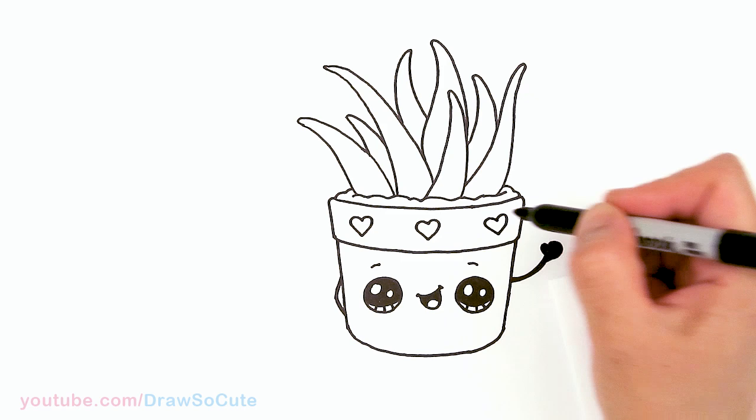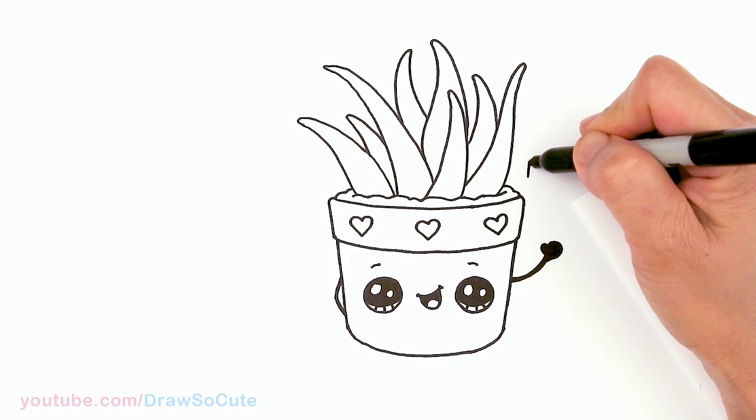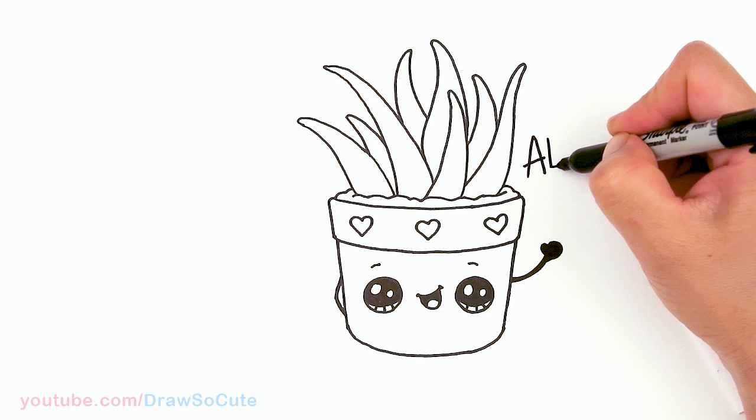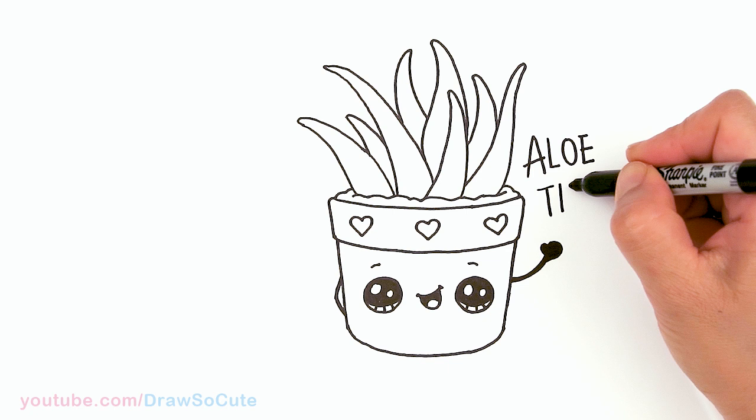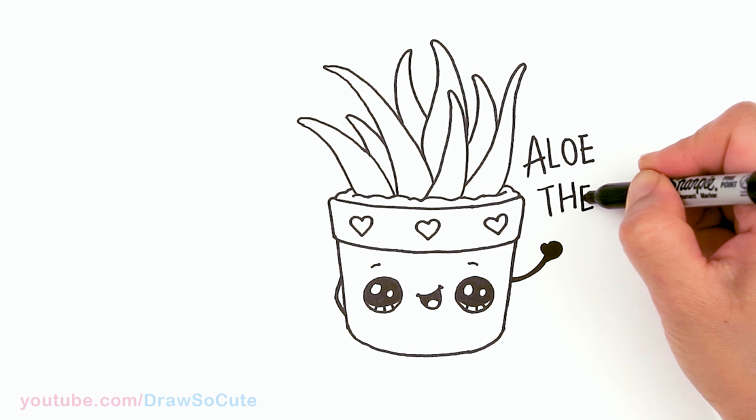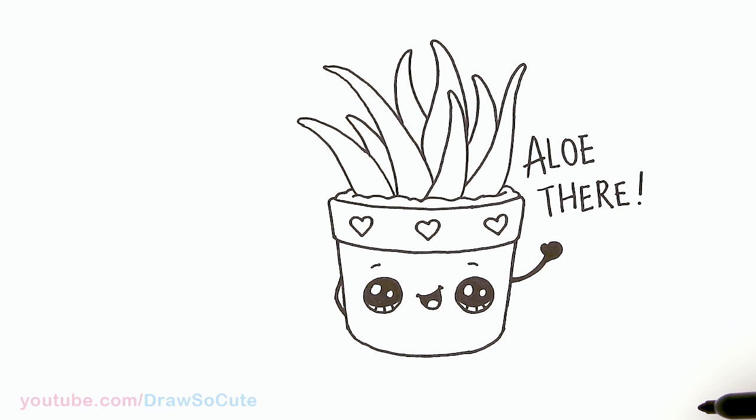So now that we're done with the drawing. I'm going to come in here and write the pun which is aloe there. We're going to come right in this area and write a, l, o, e and there. So here, h, e, r and one more e. And an exclamation mark. And we're done.